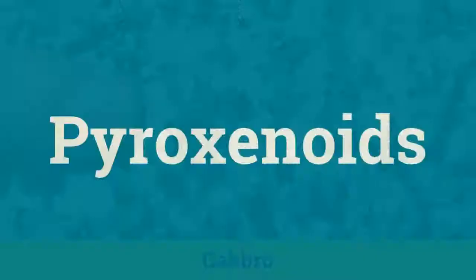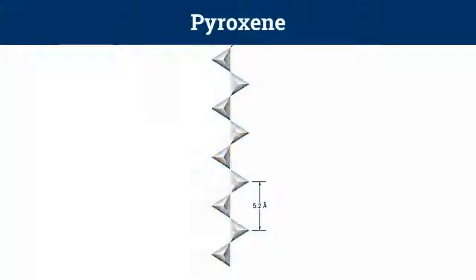We have seen that pyroxenes crystallize in orthorhombic and monoclinic systems. But sometimes a ferromagnesian inosilicate may crystallize in a triclinic system. Then it is called a pyroxenoid. Pyroxenoids consist of three or more chain silicates repeating along a single dimension.